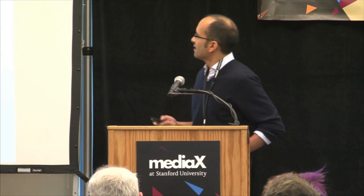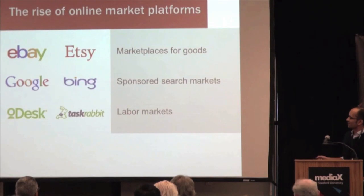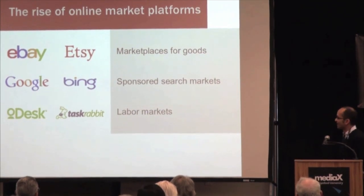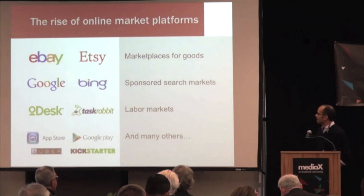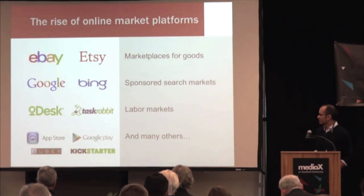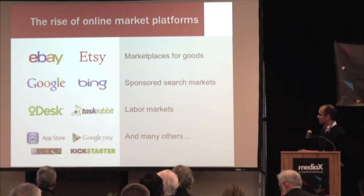One of the things we're seeing, especially in the last decade — and a trend really accelerating in the last few years in terms of the number of niches it's touching — is the rise of what I'm going to call the online market platform. These examples range from marketplaces for goods like eBay and Etsy for crafts and homemade goods, to sponsored search markets like Google and Bing, to labor markets such as Odesk — I'm on sabbatical at Odesk this year working on design of online platforms. Also TaskRabbit, which is more of a physical local labor market, and Uber, an example of a market for transportation, for cabs and cars.